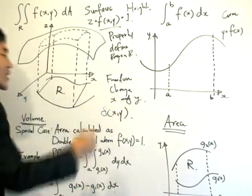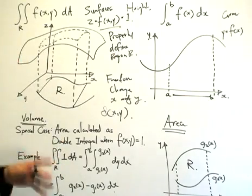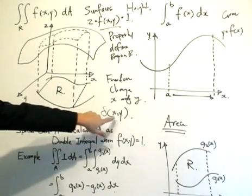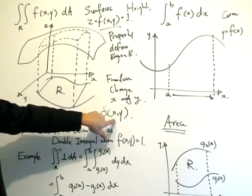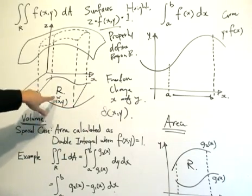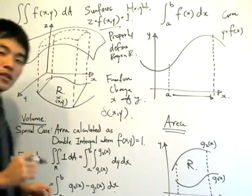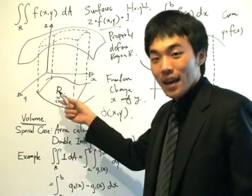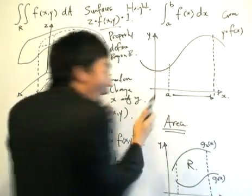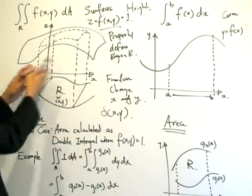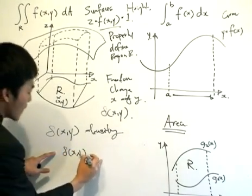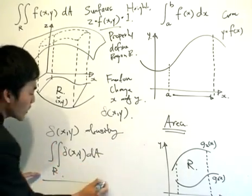In single-variable calculus we only have one degree of freedom, so we consider a line and take the density per unit length. With the double integral we can consider the density as a function of x and y — for a point (x, y) we apply the density function and get the mass at that point. When we integrate that over the entire region R, we get the total mass of the lamina R. So taking the double integral of density(x, y) with respect to elementary area dA over R gives us the total mass.